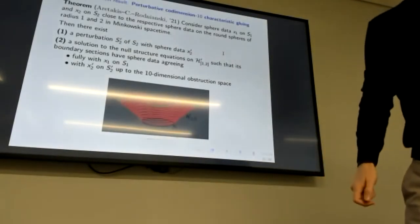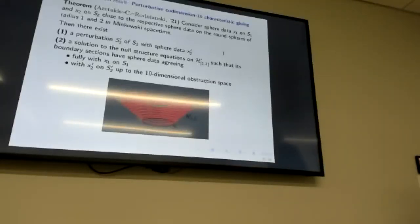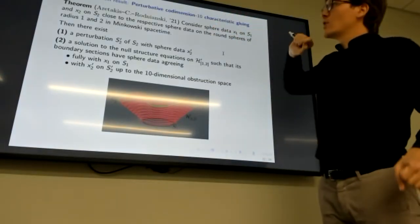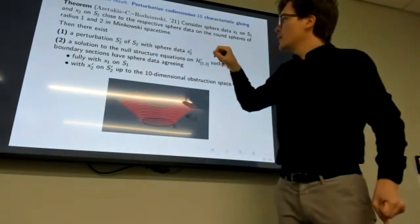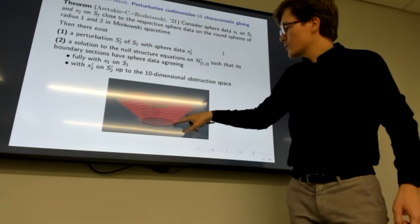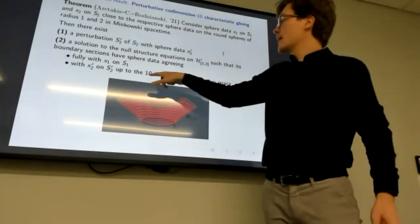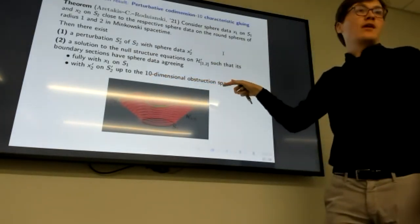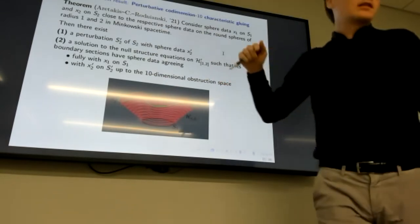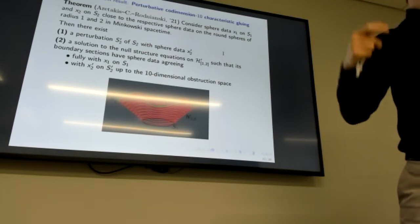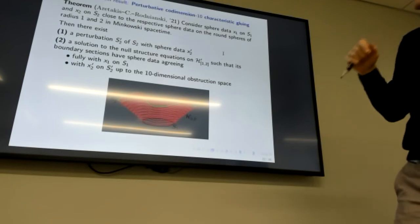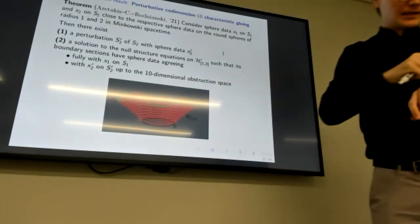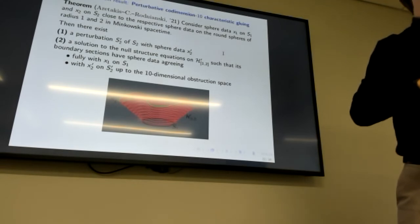Let me state the main result. Consider sphere data X₁ on S₁ and X₂ on S₂ close to the round spheres of Minkowski of radii 1 and 2 respectively. Then I can perturb S₂ to S₂' and construct a solution to the null structure equations from S₁ to S₂' that glues — up to the 10-dimensional space of gauge-invariant charges I cannot do anything about. In other words, for our C² gluing, we can glue up to this 10-dimensional space.